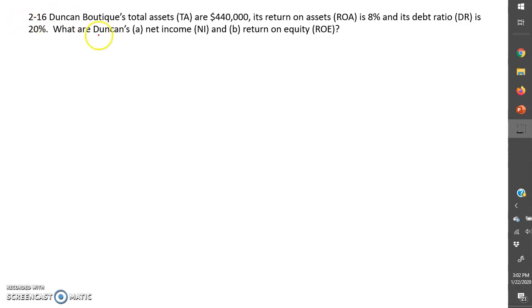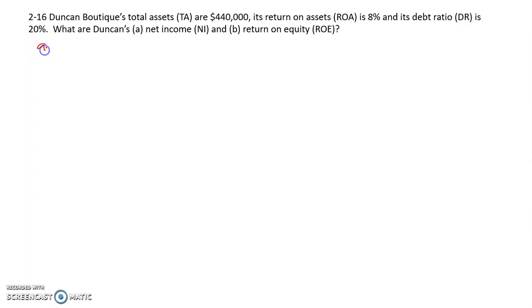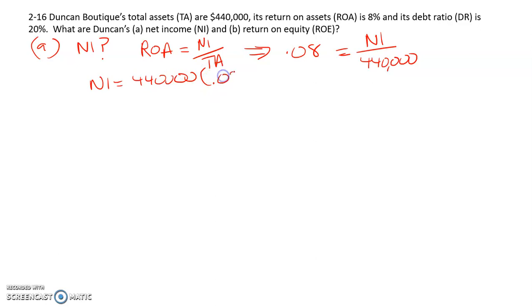So what we can do here is we need net income. We have ROA and total assets. ROA equals net income divided by total assets. So 0.08 equals net income divided by $440,000.